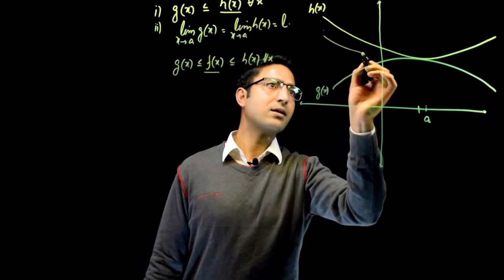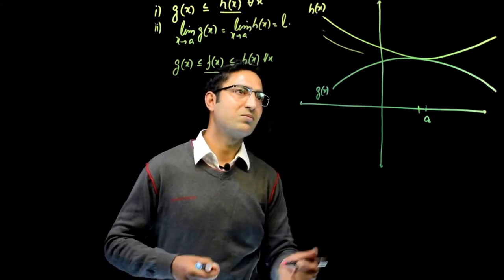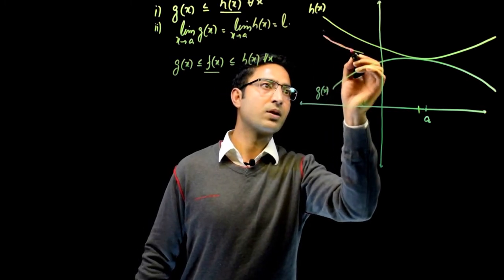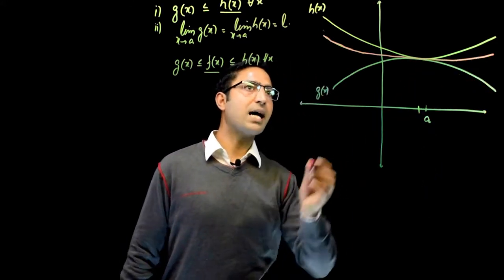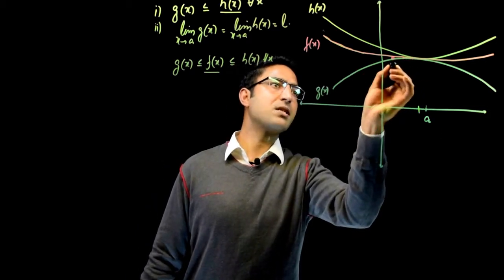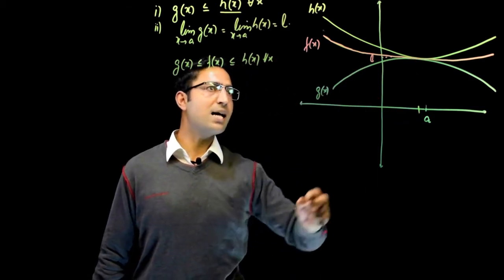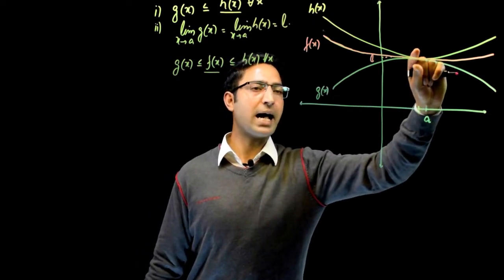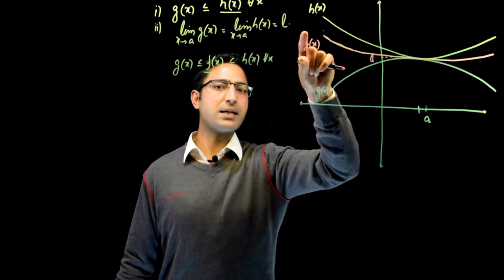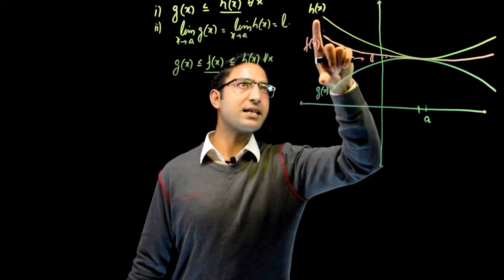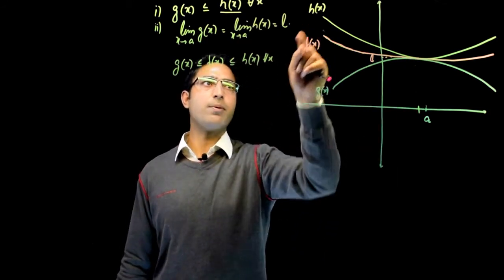But when it reaches near a, it has to pass through this point, such that the limit of f(x) at a is also equal to L. If this is L, then the limit of h(x), g(x) and f(x) at a is same as L. We are pinching f(x) between h(x) and g(x) at point a. Then they meet at this point, and we are placing the function f(x) and its graph in between h(x) and g(x), so it has to go through this pinch.